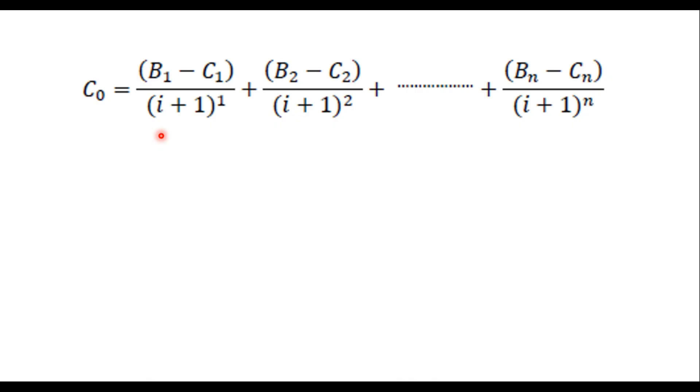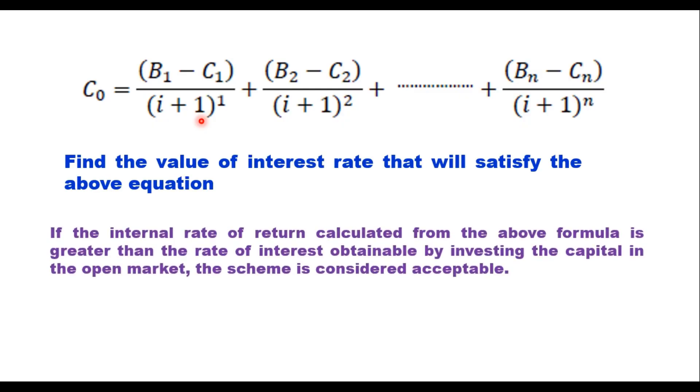Now when you discount it, then it becomes 1 minus i. So the problem is to find the value of interest rate that will satisfy this equation. If the internal rate of return calculated from the above formula is greater than the rate of interest obtainable by investing the capital in open market, the scheme is considered acceptable.